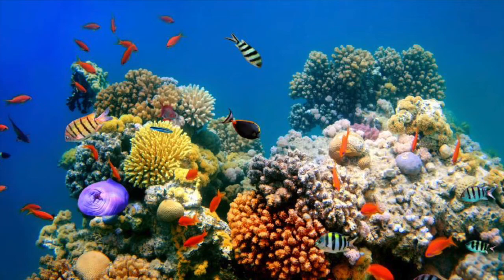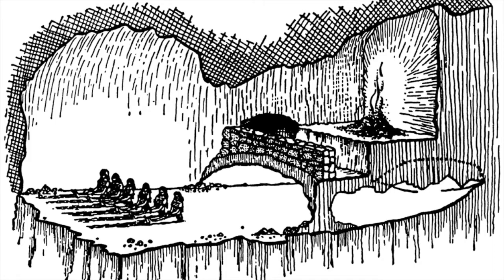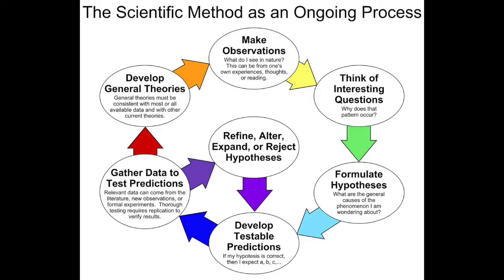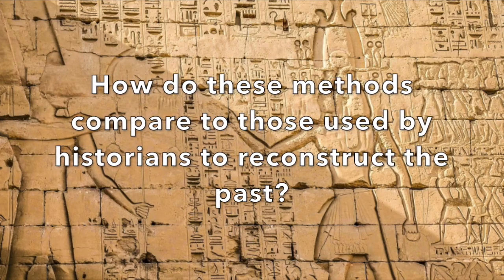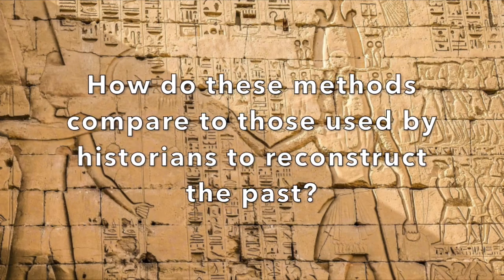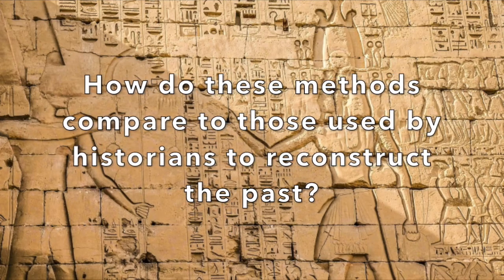Evolutionary history is an especially challenging area of science because experiments cannot be performed to establish past events or their causes. There are nonetheless scientific methods of establishing beyond reasonable doubt what happened in some cases. How do these methods compare to those used by historians to reconstruct the past?